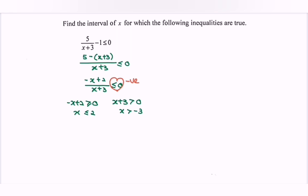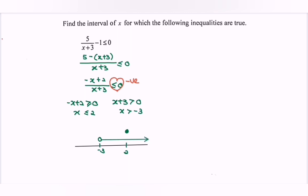Kindly illustrate the situation on the real number line. So here we have negative 3 and here we have 2. For negative 3, we have an empty circle since x is greater than negative 3. For 2, we have a filled circle since x is less than or equals to 2.